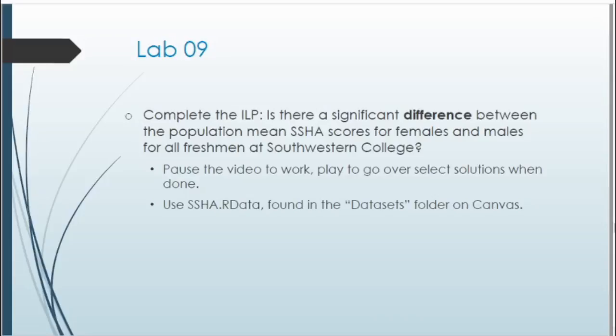That wraps up the Review by Example, so let's get started with the ILP. The prompt is: is there a significant difference between the population mean SSHA scores for females and males for all freshmen at Southwestern College? Go ahead and pause the video to work on this, and when you're done click play and we'll go over a few select solutions. This lab will be using the SSHA.rdata dataset — remember all datasets can be found in the datasets folder on Canvas.